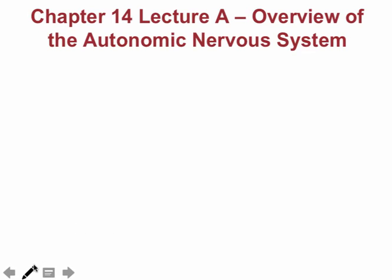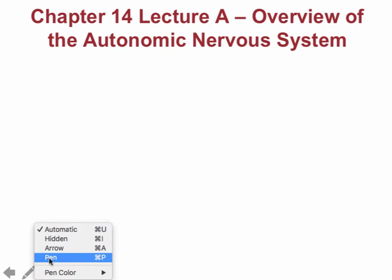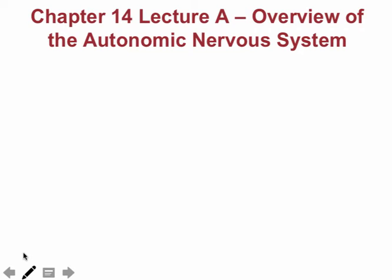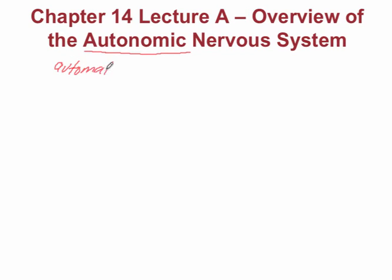This short video is an overview of the autonomic nervous system. Looking at the name first, 'autonomic' resembles the word 'automatic' — and that's exactly what it is. This system is automatically controlled by our central nervous system, so it's also referred to as the involuntary nervous system because we don't consciously control it. Specifically, it controls the visceral organs.